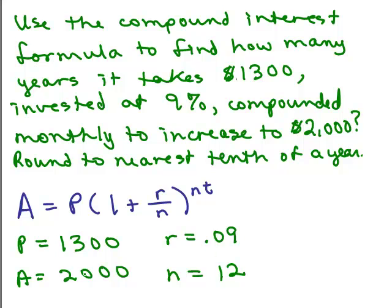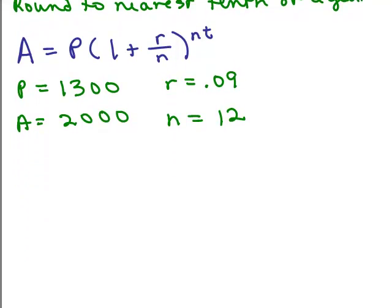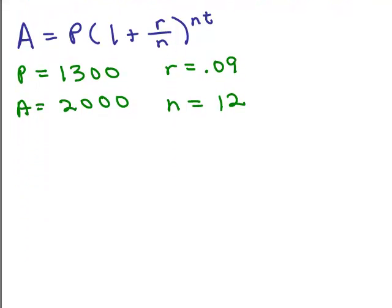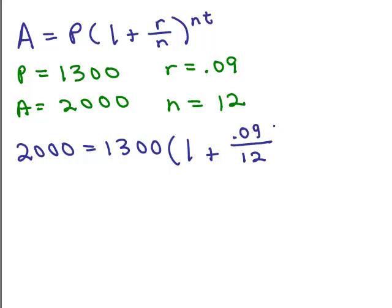We want to fill all these numbers into this formula and then compute and find out what T is. So we have A, we're going to plug in 2000. P is 1300, and we have 1 plus 0.09 divided by 12, because that's R over N, to the N T. So N is 12, so it's 12T.